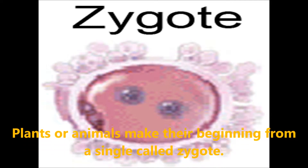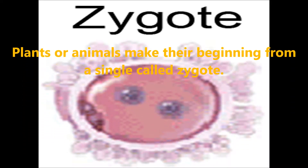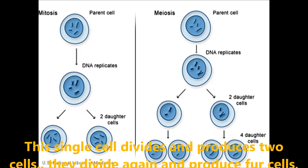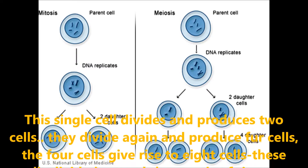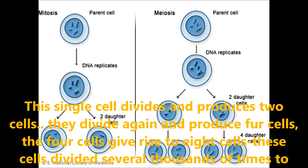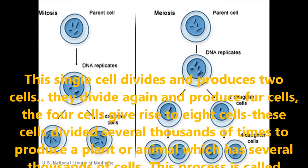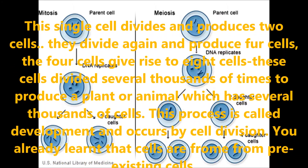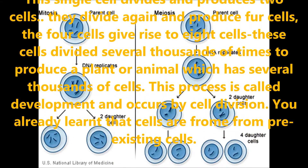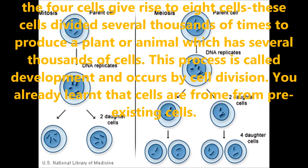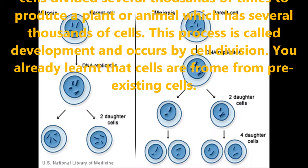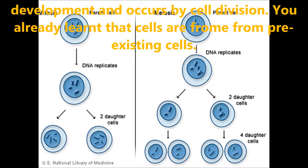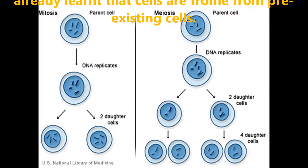Plants or animals make their beginning from a single cell called a zygote. This single cell divides and produces two cells. They divide again and produce further cells. The four cells give rise to eight cells. These cells divide several thousands of times to produce a plant or animal which has several thousands of cells. This process is called development and occurs by cell division.